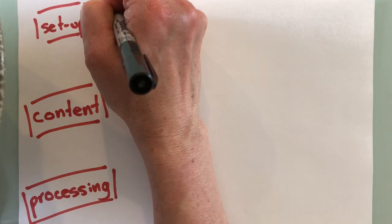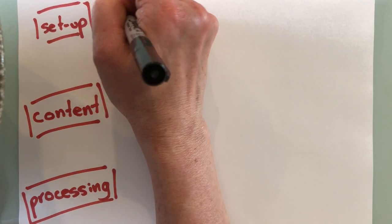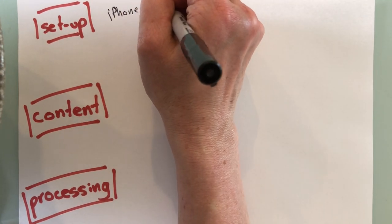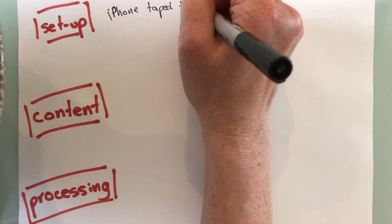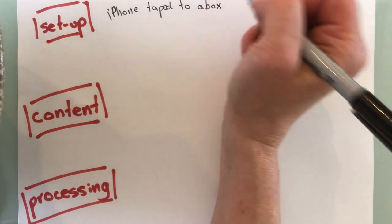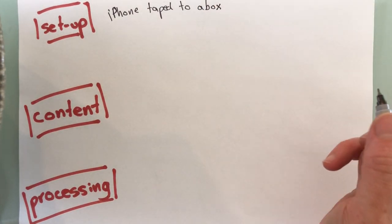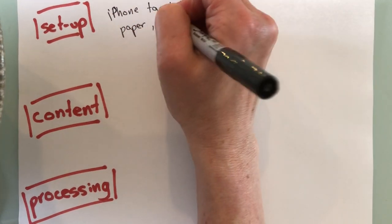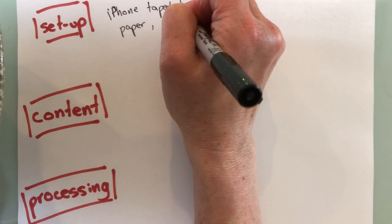So what I've got is an iPhone and it is taped to a box. They're stacked a few high. I've got some paper, a thin marker. You could use a series of colored markers if you wanted to be even fancier. You could use sticky notes.